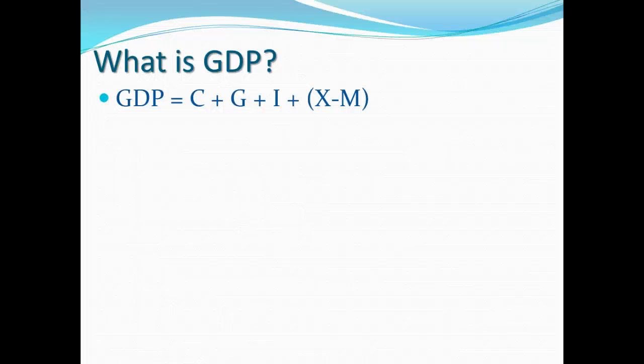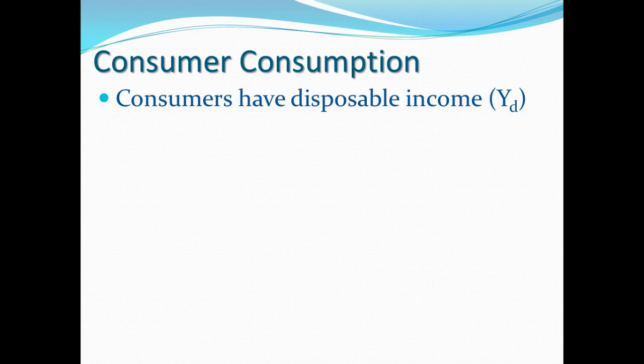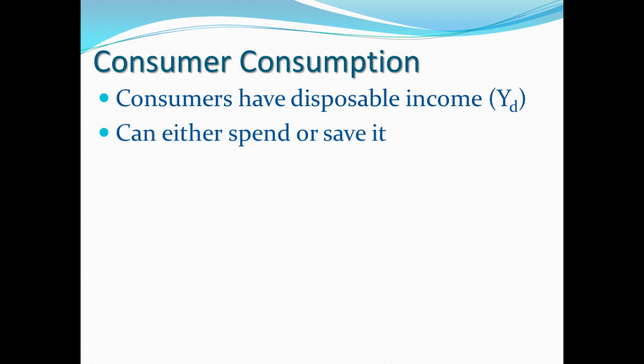Today we're going to look at C and I. When it comes to consumer spending, people have what's known as disposable income — the money they've earned after taxes that is available to do what they want with. In this model, there are really two things you can do with your money: you can either spend it or you can save it.